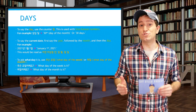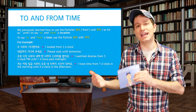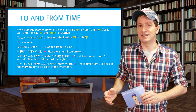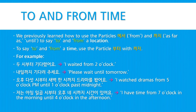We previously learned how to use the particles 에서 and 까지 to mean 'to' and 'from' a location. But to say 'to' and 'from' a time, use 부터 with 까지. For example: 두 시부터 기다렸어요 — I waited from two o'clock. 내일까지 기다려 주세요 — Please wait until tomorrow. 오후 다섯시부터 새벽 한시까지 드라마를 봤어요 — I watched dramas from five o'clock PM until one o'clock past midnight. 저는 아침 일곱시부터 오후 네시까지 시간이 있어요 — I have time from seven o'clock in the morning until four o'clock in the afternoon.